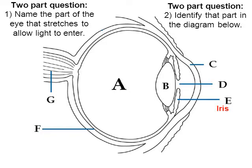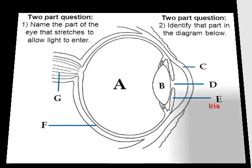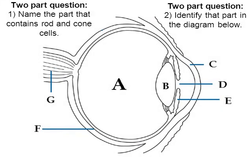Here's another one. Pause the video — I'm going to go over the answer in three, two, one. Name the part of the eye that contains rod and cone cells, and then identify it. I hope you chose the retina. Retina is the answer to number one, letter F is the answer to number two.